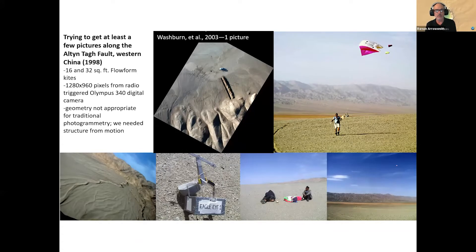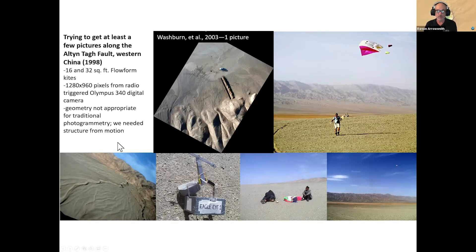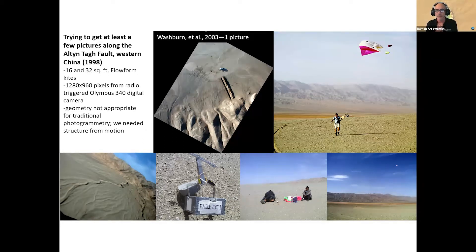So I started actually in 1998 flying kites with a camera, and it was very kind of crude. We would fly with this radio-triggered Olympus camera, and the button would be pushed manually by a servo. We might take tens of pictures, but we got one or two useful ones.